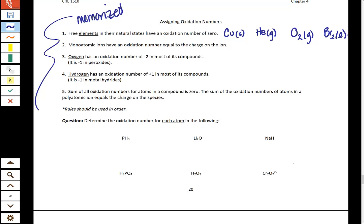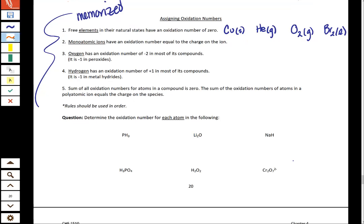Then our next rule is monatomic ions have an oxidation number equal to the charge on the ion. So if we look at something like chloride ion, that has a one minus charge and it has a minus one oxidation number. Something like sulfide, something like sodium. Their charges and their oxidation numbers are going to be the same.